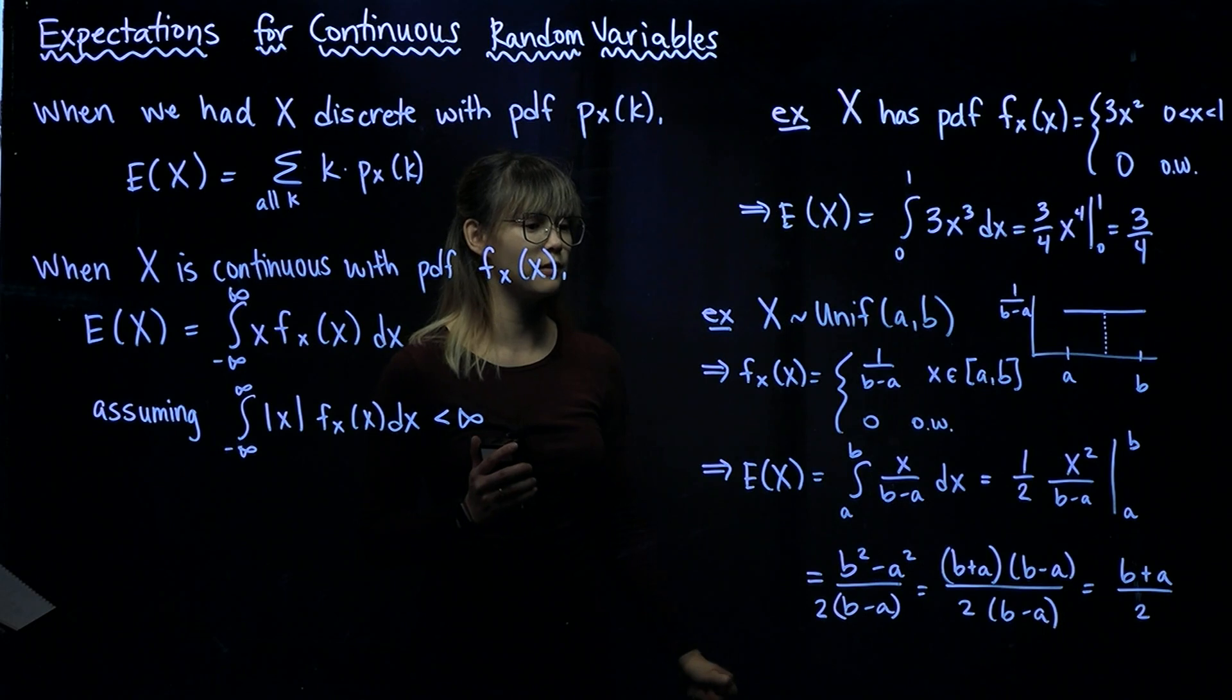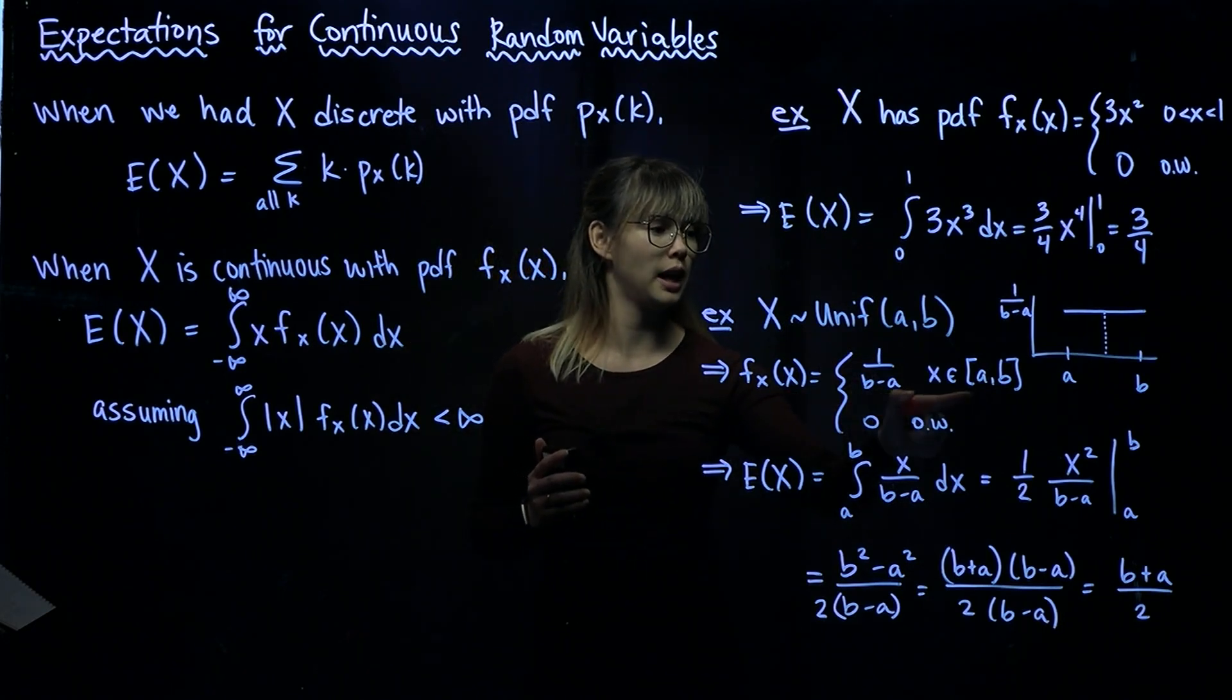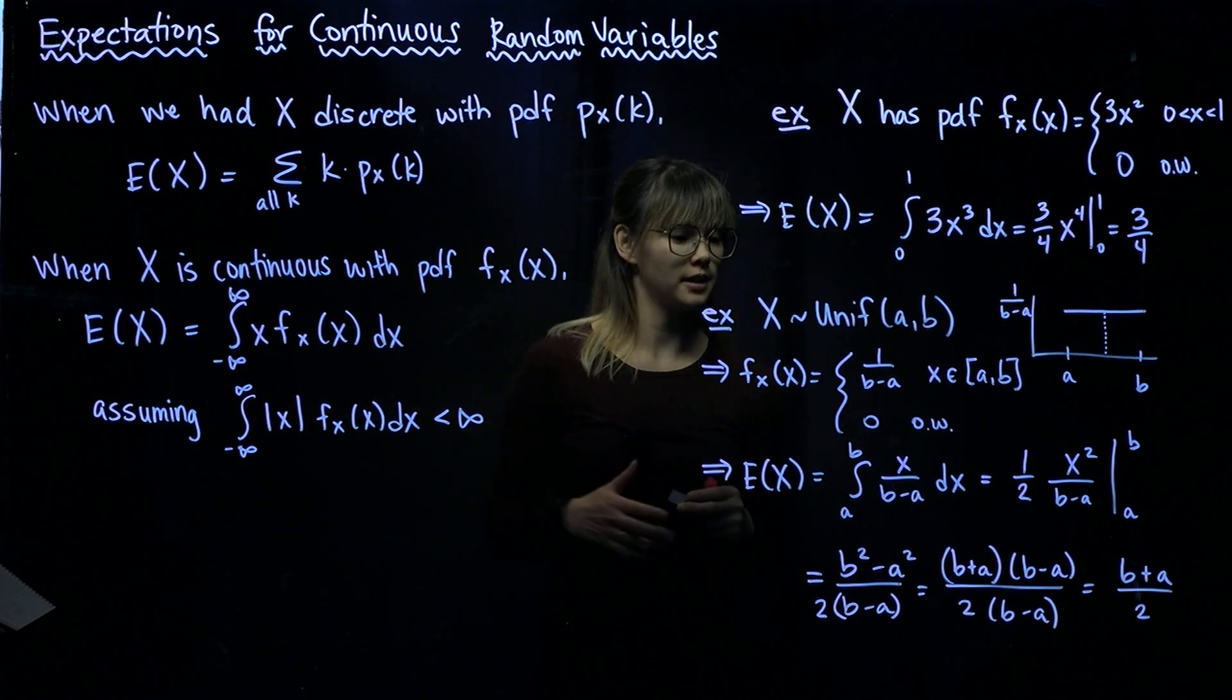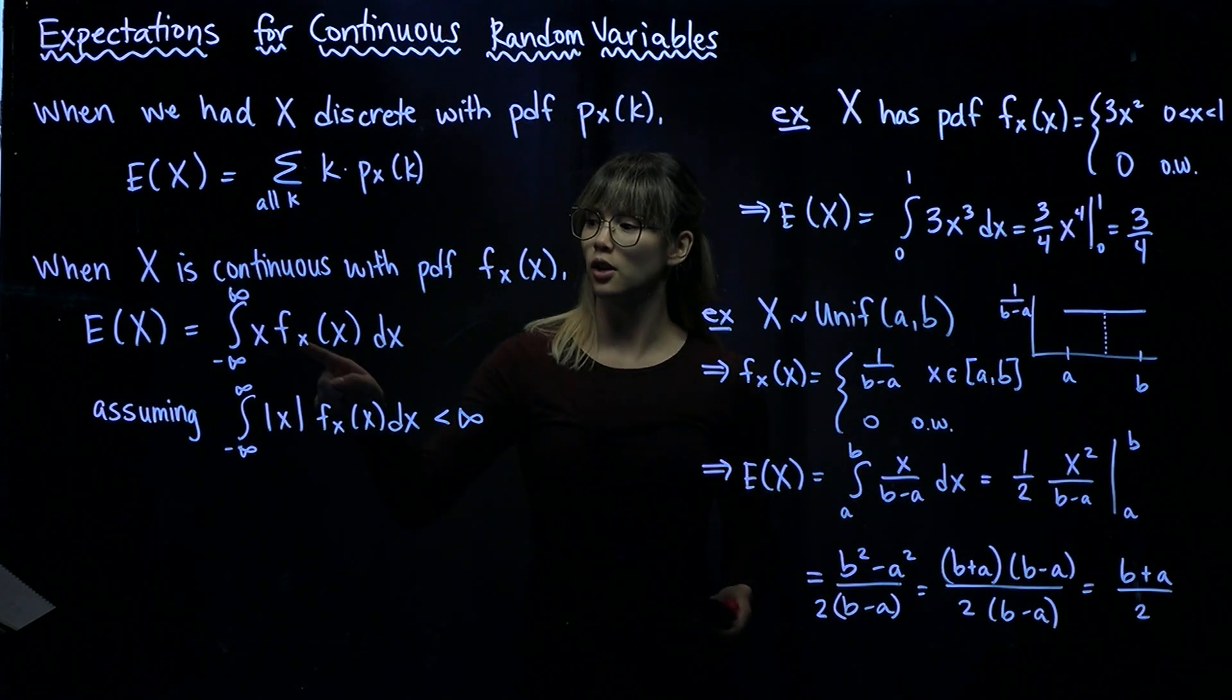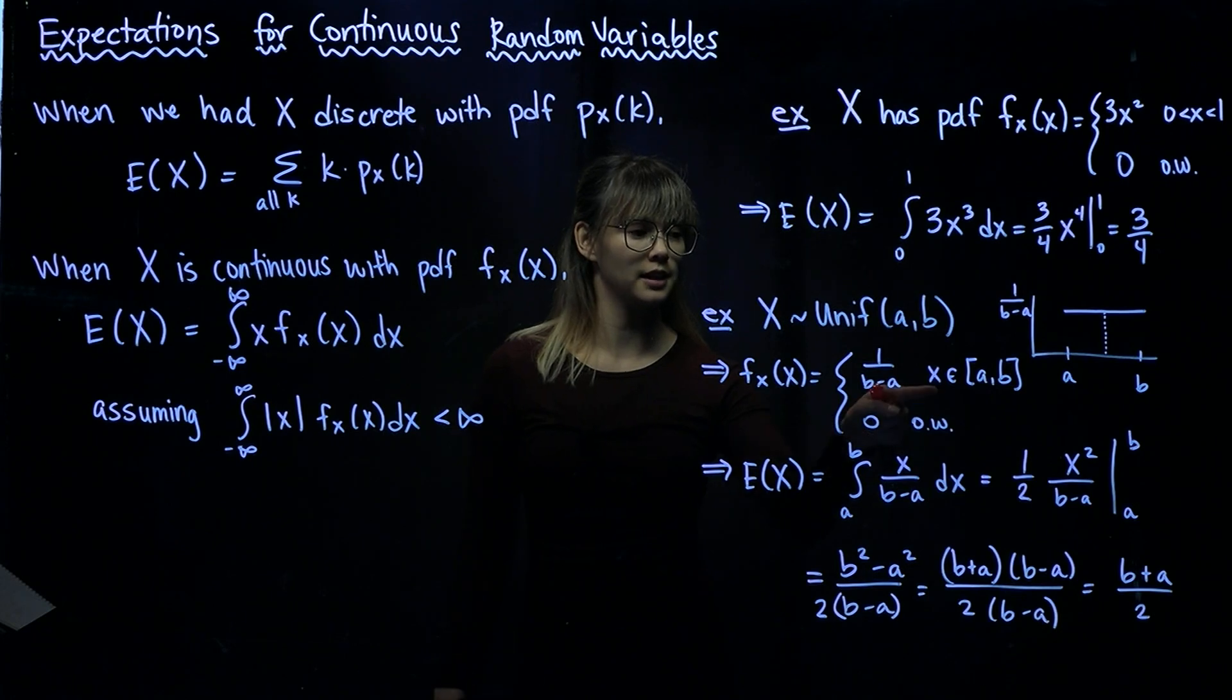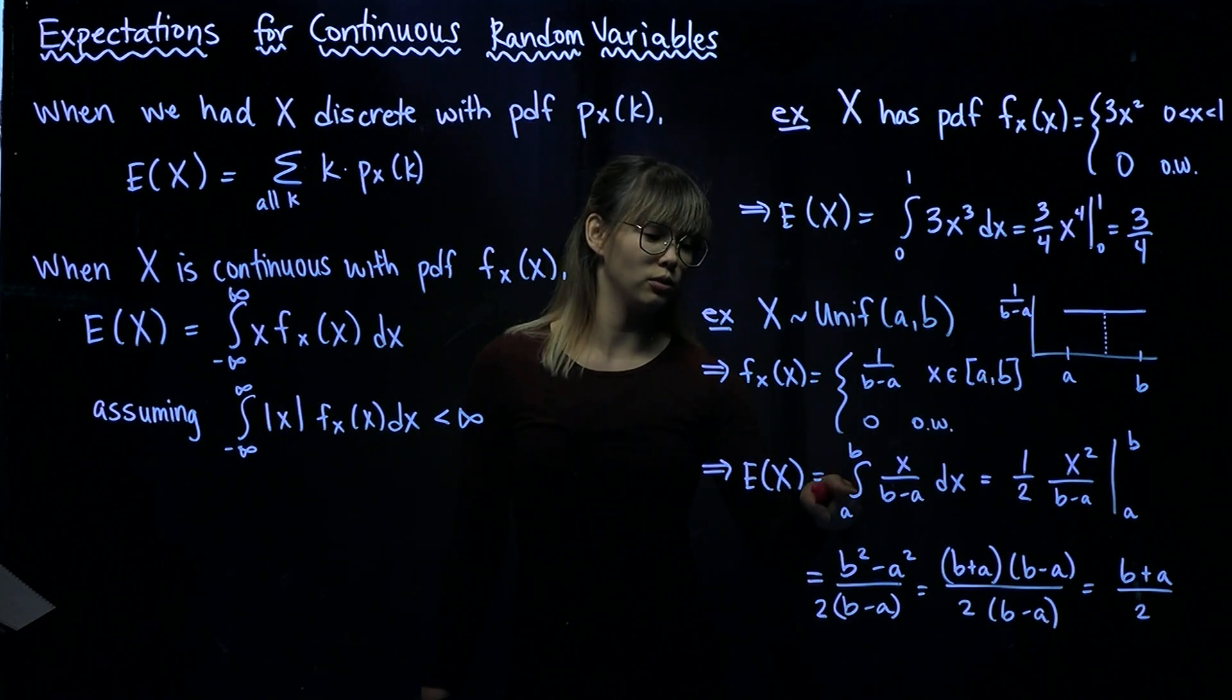All right, so that's how we can get our PDF. Our PDF is going to be equal to 1 over B minus A whenever X is between A and B, and 0 otherwise. So let's set up our expected value for X here. So again, we're going to take this and incorporate this information. So since it's 0, our PDF is 0 whenever X is outside of the interval from A to B, then that means that we can simplify this integral down to integrating from A to B.